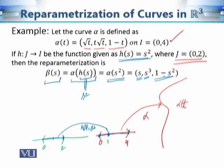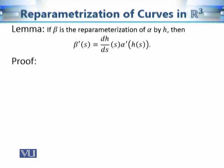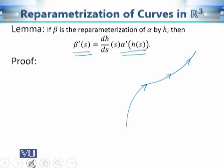The next lemma gives the relationship between the velocity vectors of alpha and beta. Since alpha and beta represent the same geometrical path, one difference can be that the two objects move at different speeds. This lemma will tell us the relationship between the velocity vectors alpha'(t) and beta'(s), including differences in speed and orientation — for instance, whether alpha and beta are moving in the same or opposite directions.